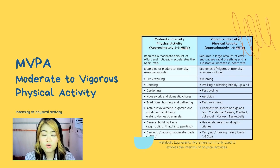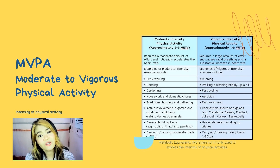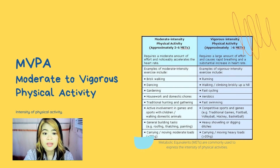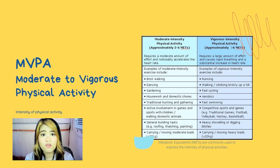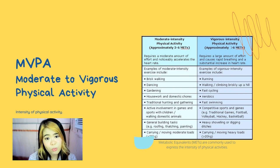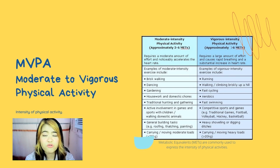One MET is the energy you spend sitting at rest — your resting or basal metabolic rate. So, an activity with a MET value of 4 means you're exerting 4 times the energy than you would if you were sitting still. To put it in perspective, a brisk walk at 3 or 4 miles per hour has a value of 4 METs. Jumping rope, which is a more vigorous activity, has a MET value of 12.3.